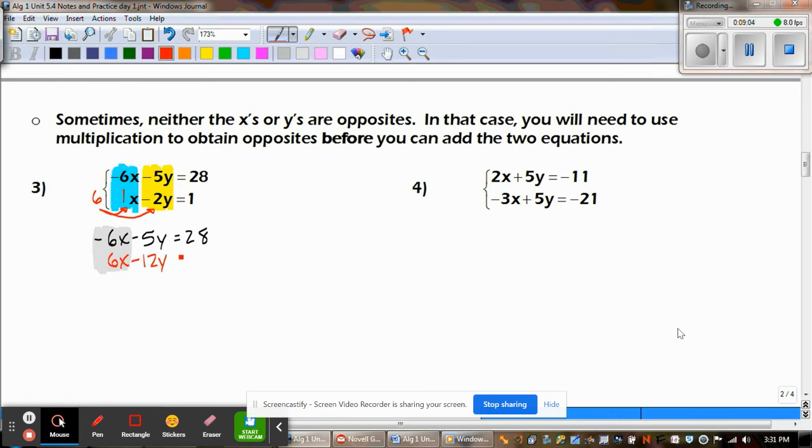Six times negative two gives us negative 12y, and then six times one is six. Okay, well that was step one. Now we're going to add the equations up.